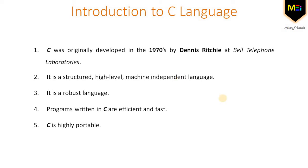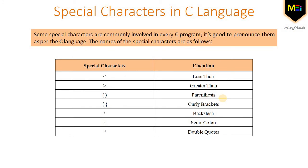Next, let's have a look at some symbols or special characters which are named in programming languages and used throughout this course. The symbol '<' is pronounced as 'less than', '>' as 'greater than', round brackets are pronounced as parentheses, curly brackets are pronounced as curly brackets, '\' is backslash, ';' is semicolon, and '""' are double quotes. There are many more special characters, but these are among the most important ones that commonly appear in the structure of a C program.